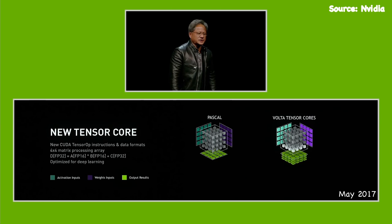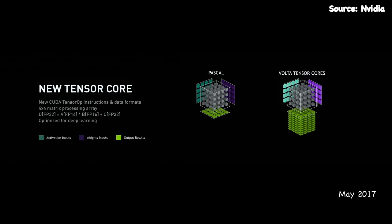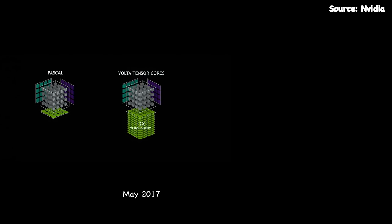What we should do is do it in parallel and in parallel. And so this is what the Volta Tensor Core does. It literally does the 4x4 multiply plus C at the same time. To solve this problem, Nvidia introduced Tensor GPU. Specialized in matrix operation, Nvidia then introduced Ampere architecture in 2020 and Hopper architecture in 2022.